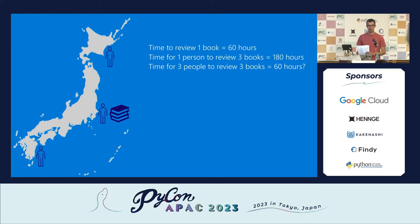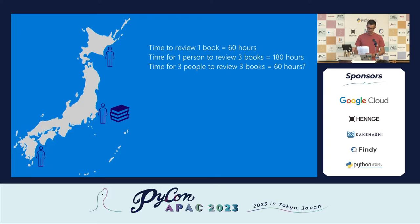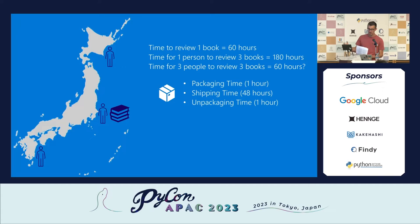So you might think: can we do this computation in parallel? If the person is a CPU and we've got three CPUs, can we do the computation in parallel — what would it take for three people to review three books? You might think that should take 60 hours. If this were a math question, that's probably the right answer. This is a computer science question, so that is the wrong answer. The reason it's the wrong answer in my analogy is because they have to package the book, they have to ship the book, and then the person receiving the book has to unpackage it.